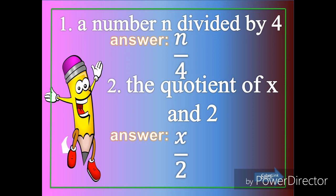Then next, number two: the quotient of x and 2. So again, we're going to use the symbol of division because of the word quotient of. So therefore, the answer is x over 2.